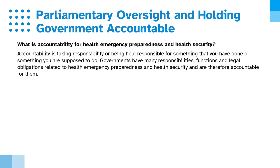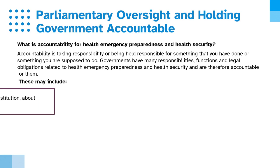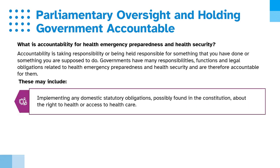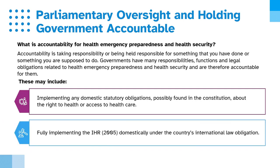Governments have many responsibilities, functions, and legal obligations related to health emergency preparedness and health security and are therefore accountable for them. These may include implementing any domestic statutory obligations possibly found in the constitution about the right to health or access to health care, and fully implementing the IHR domestically under the country's international law obligation.